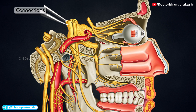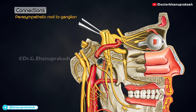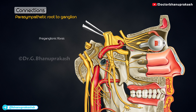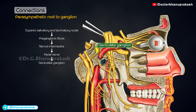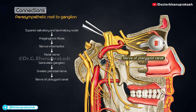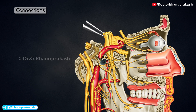Connections: The parasympathetic root of the ganglion is formed by the nerve of the pterygoid canal. It carries preganglionic fibers that arise from neurons near the superior salivatory and lacrimatory nuclei, and pass through the nervus intermedius, the facial nerve, the geniculate ganglion, the greater petrosal nerve, and the nerve of the pterygoid canal to reach the ganglion. The fibers relay in the ganglion.